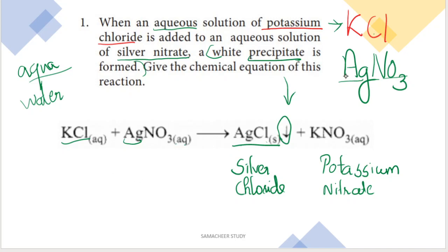Silver is Ag, and nitrate is NO3, so AgNO3 is silver nitrate. The chemical equation gives AgCl — silver chloride — as the precipitate (shown with a downward arrow, meaning it is a solid), plus potassium nitrate KNO3.